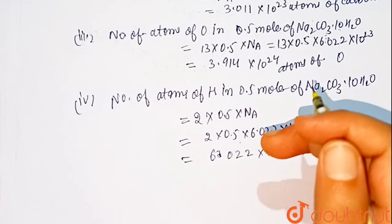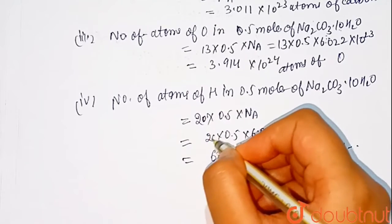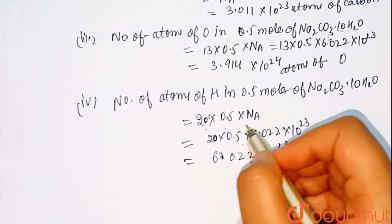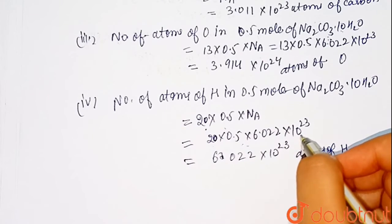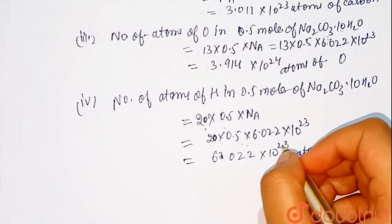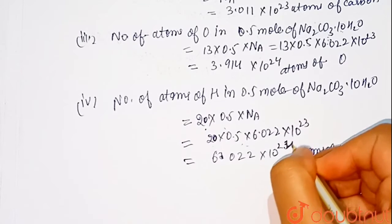Sorry, here 20. 20 times 0.5 times NA, 20 times 0.5 times 6.022 times 10 to the 23 which equals 6.022 times 10 raised to power 24 atoms.